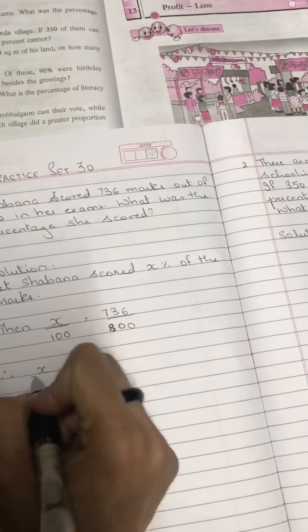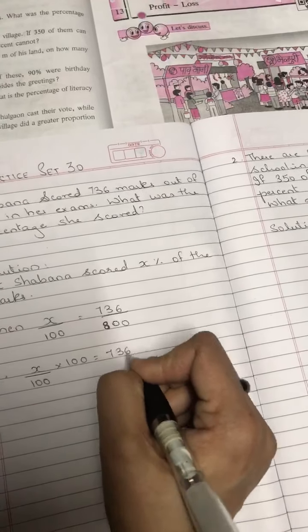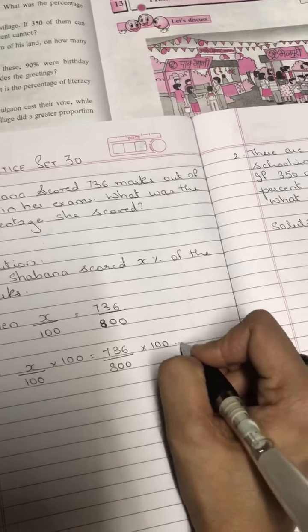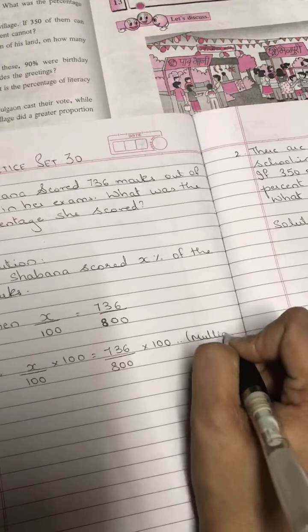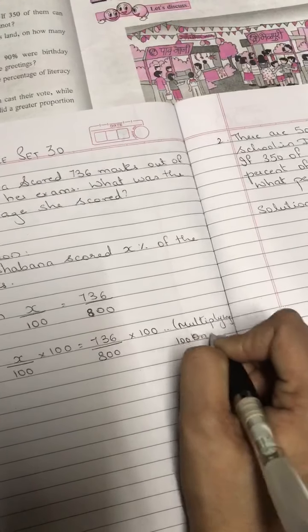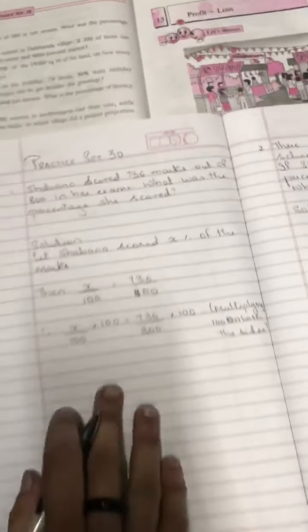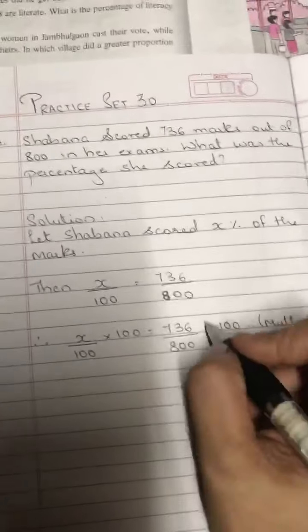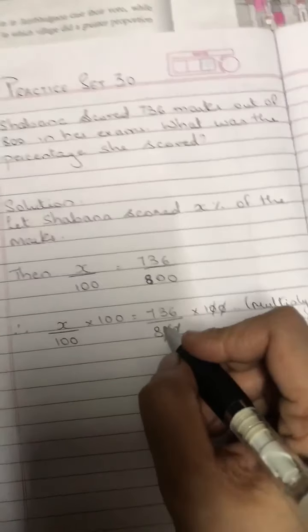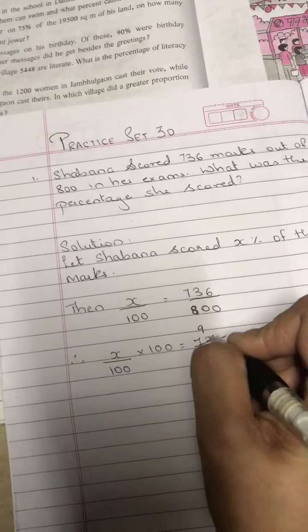Now, therefore, x upon 100 into 100 is equal to 736 upon 800 into 100. Getting me students? Therefore, multiplying 100 on both the sides, as I told you in the explanation part.